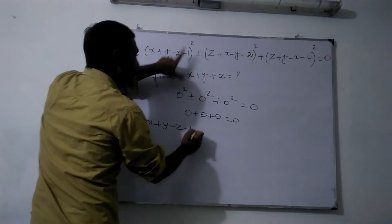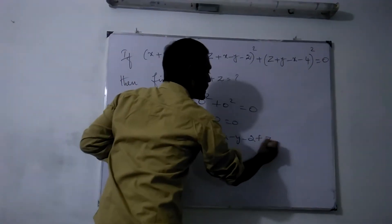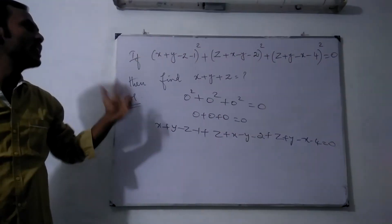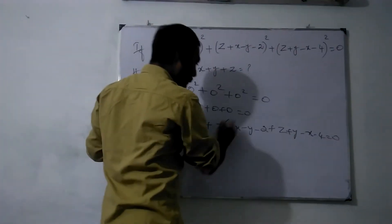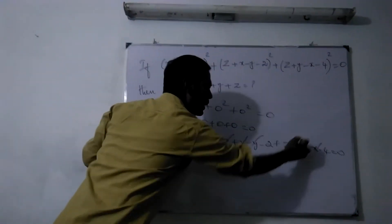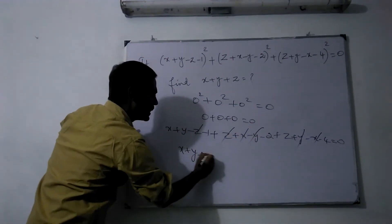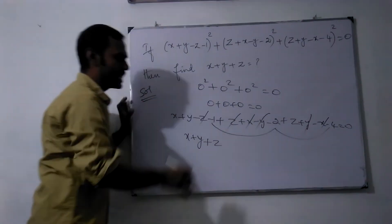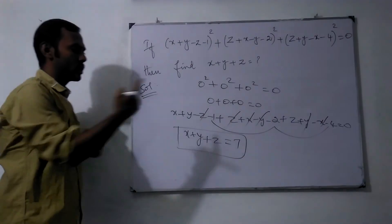x plus y minus z minus 1 plus z plus x minus y minus 2 plus z plus y minus x minus 4 is equal to 0. The z terms cancel, the x terms cancel, and the y terms cancel, leaving x plus y plus z minus 1 minus 2 minus 4, so x plus y plus z is equal to 7.